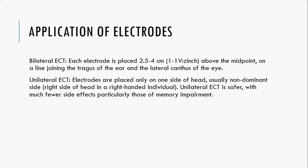For bilateral ECT, each electrode is placed 2.5 to 4 cm above the midpoint on a line joining the tragus of the ear and the lateral canthus of the eye. In unilateral ECT, electrodes are placed only on one side of the head, usually the non-dominant side — the right side of the head in a right-handed individual. Unilateral ECT is safer with much fewer side effects, particularly those of memory impairment.